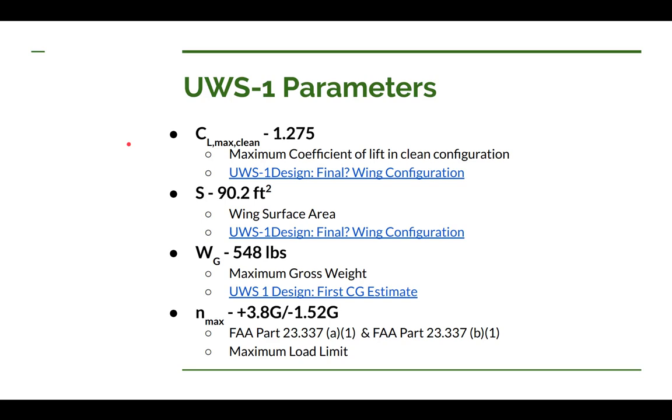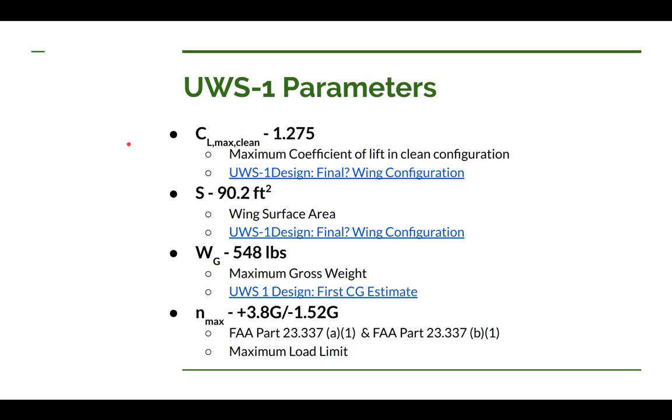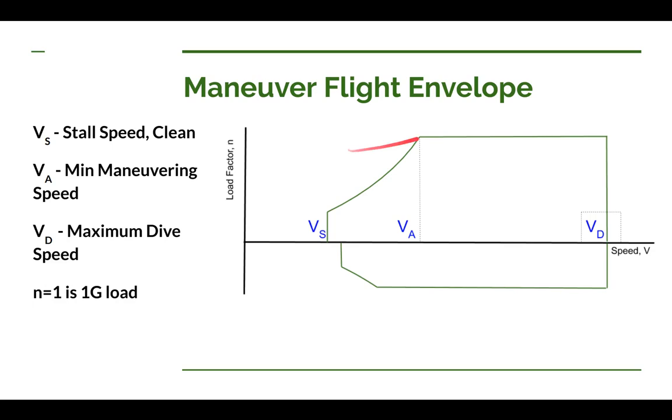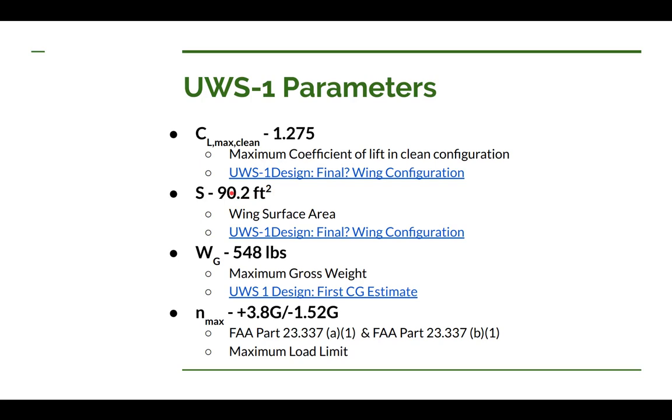In this slide I'm going to talk about some of the design parameters for the UWS1 ultralight. The maximum coefficient of lift when we're in the clean configuration, flaps not deployed, we came up with 1.275. The surface area that we came up with was 90.2 square feet. And again that was in the video Final Wing Configuration.